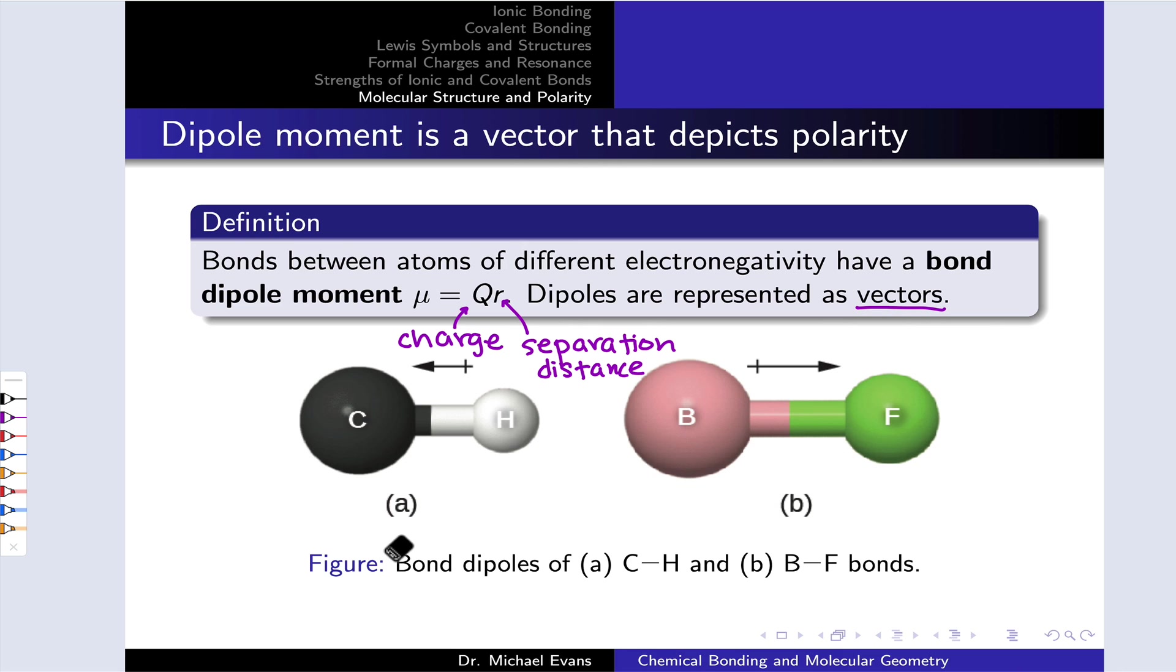In these bond dipole vectors, we use the head of the arrow to represent the region of negative charge and the tail of the arrow with a little cross to represent the region of positive charge. And that's true of both of these bond dipoles, which happen to point in opposite directions because of the differences in electronegativity. If you think back to our discussion of electronegativity, you can rationalize and predict the directions of these bond dipole vectors.